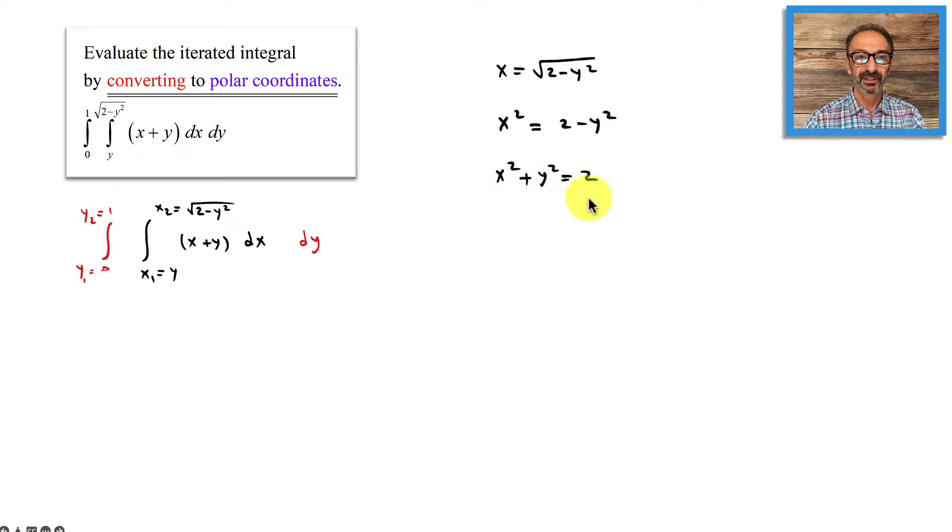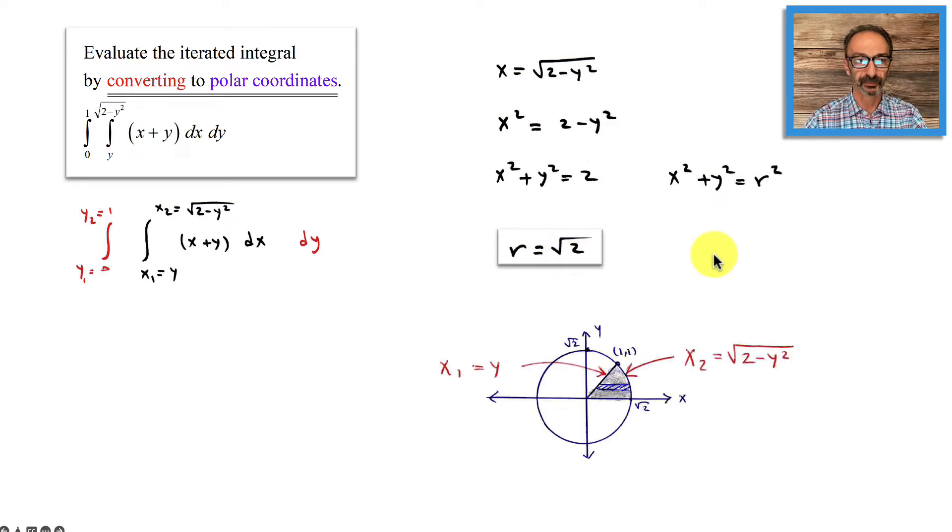Comparing this to x squared plus y squared equals r squared, that means 2 equals r squared or r equals square root of 2. That's a circle with the radius of square root of 2 centered at the origin (0,0). That's what we have.